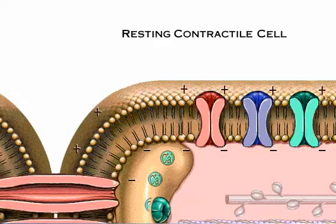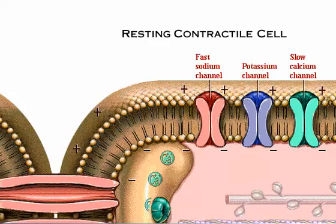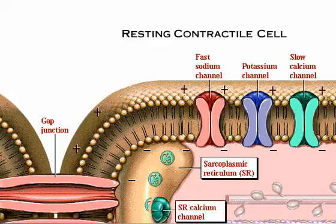Now our story moves on to the cardiac contractile cell. This cell relies on the autorhythmic cell to generate an action potential and pass the impulse down the line before the cell can contract. Like the autorhythmic cell, it has ion transport channels, but they are slightly different. Gap junctions link autorhythmic and contractile cells and link contractile cells with each other. Notice the sarcoplasmic reticulum, or SR, which is a storage site for calcium. Channels within the SR membrane allow calcium ions to be released into the cell. The myofilaments are the contractile units of the cardiac muscle cell.